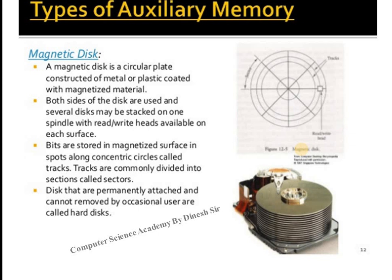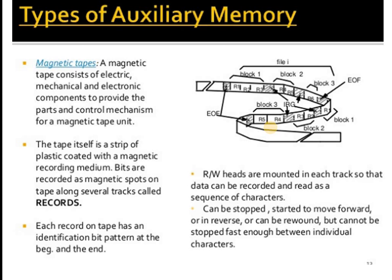One type of auxiliary memory is the magnetic disk — circular plates made of metal or plastic coated with magnetized material, just like a CD-ROM or DVD-ROM. Data is organized in cylinders and tracks, and is read out using a lens or laser beam, and finally displayed on the screen.